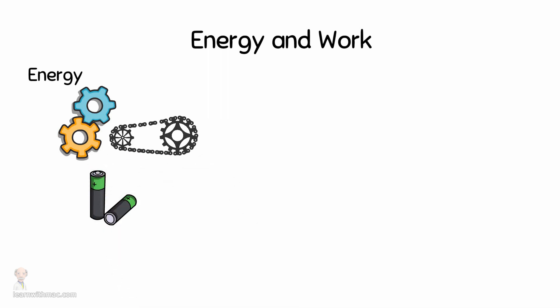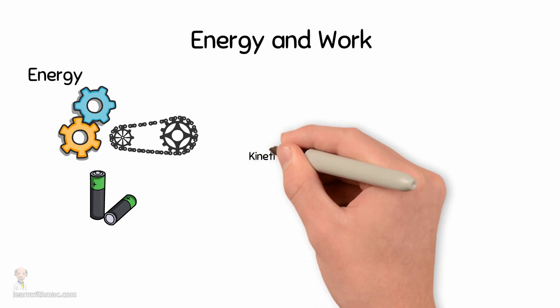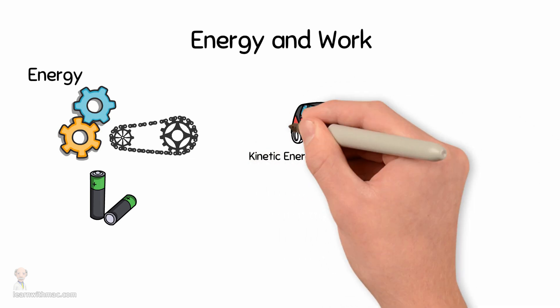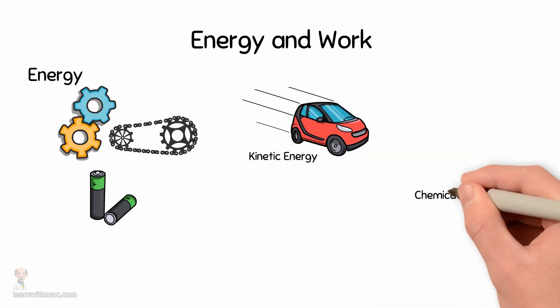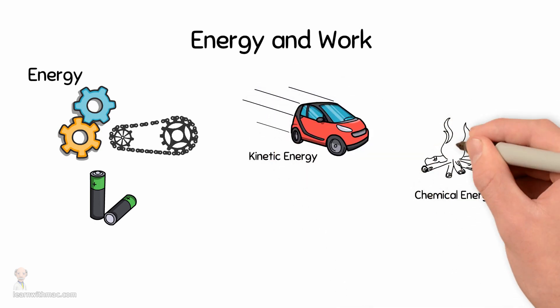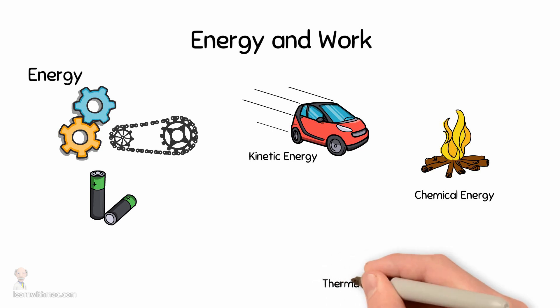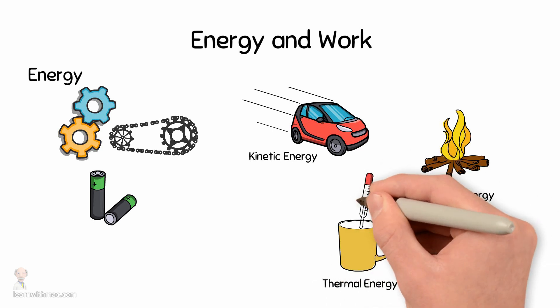There are many different forms of energy. Examples include the kinetic energy of a moving object, the chemical energy released when a fuel burns, and the thermal energy due to an object's temperature.